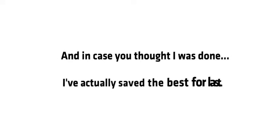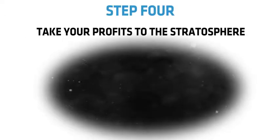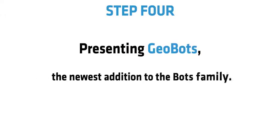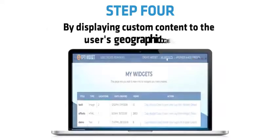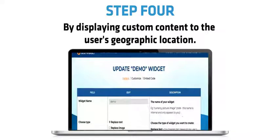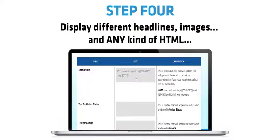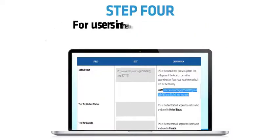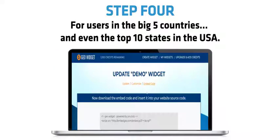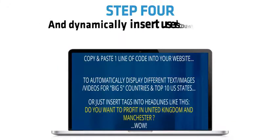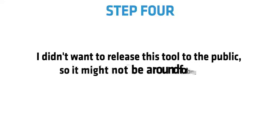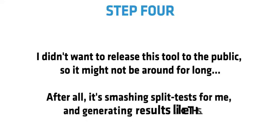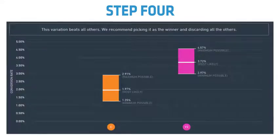And in case you thought I was done, I've actually saved the best for last. Step 4: Take your profits to the stratosphere. Presenting GeoBots, the newest addition to the bots family. GeoBots allows you to increase the conversions on any website by displaying custom content based on the user's geographic location. Display different headlines, images, and any kind of HTML for users in the big five countries, and even the top ten stories in the USA. Dynamically insert users' countries, cities, or regions into headlines. I don't want to release this tool to the public, so it might not be around for long — it's smashing split tests for me and generating results like this.